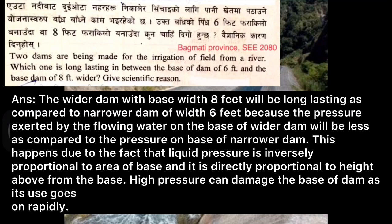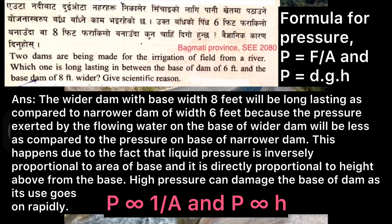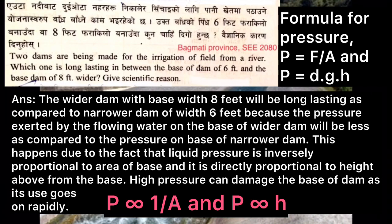It is because the pressure exerted by the flowing water on the base of the wider dam will be less as compared to the pressure on the narrower dam. This happens due to the fact that liquid pressure is inversely proportional to the area of the base and directly proportional to the height above from the base.